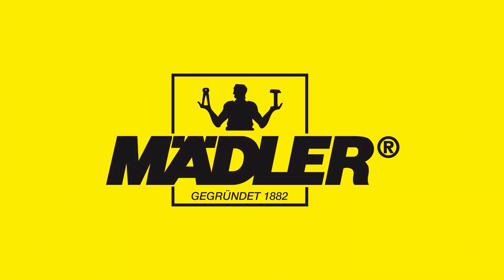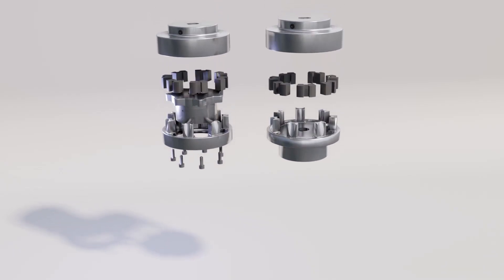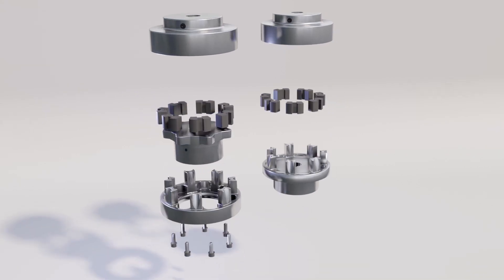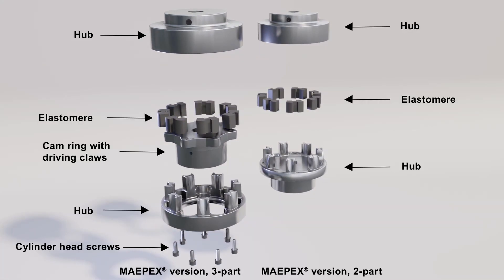In this video we show you how to assemble the two-part Mapex coupling, including determining torsional backlash and replacing the elastomers. For the three-part version of the coupling, please refer to the corresponding video.